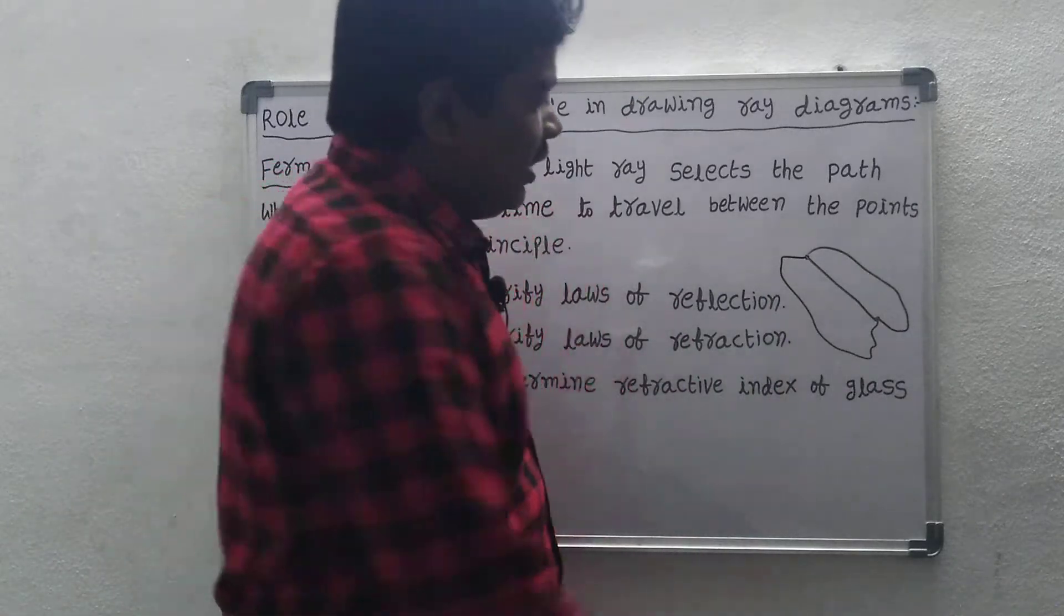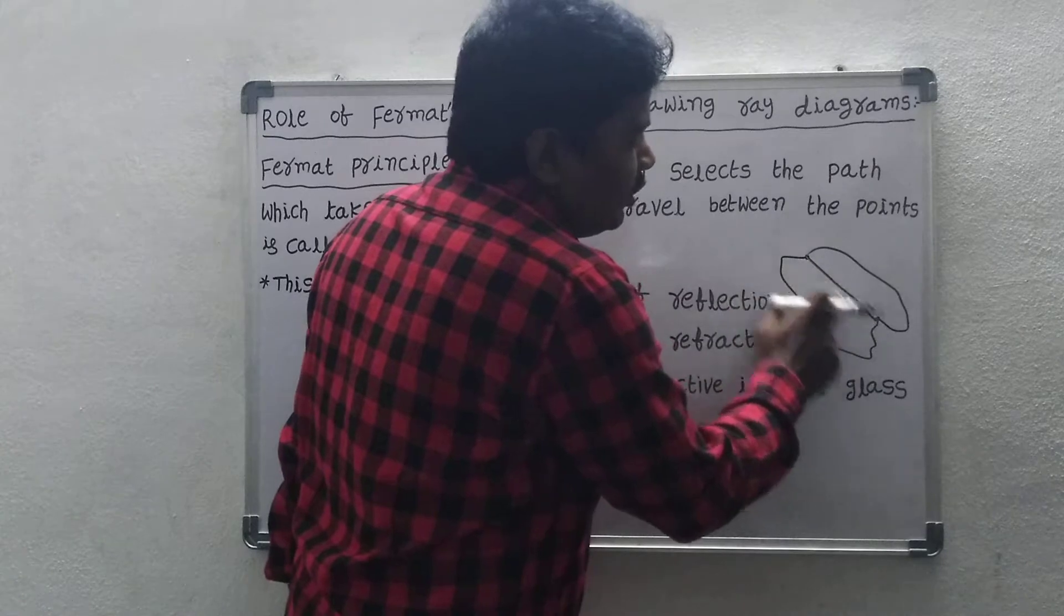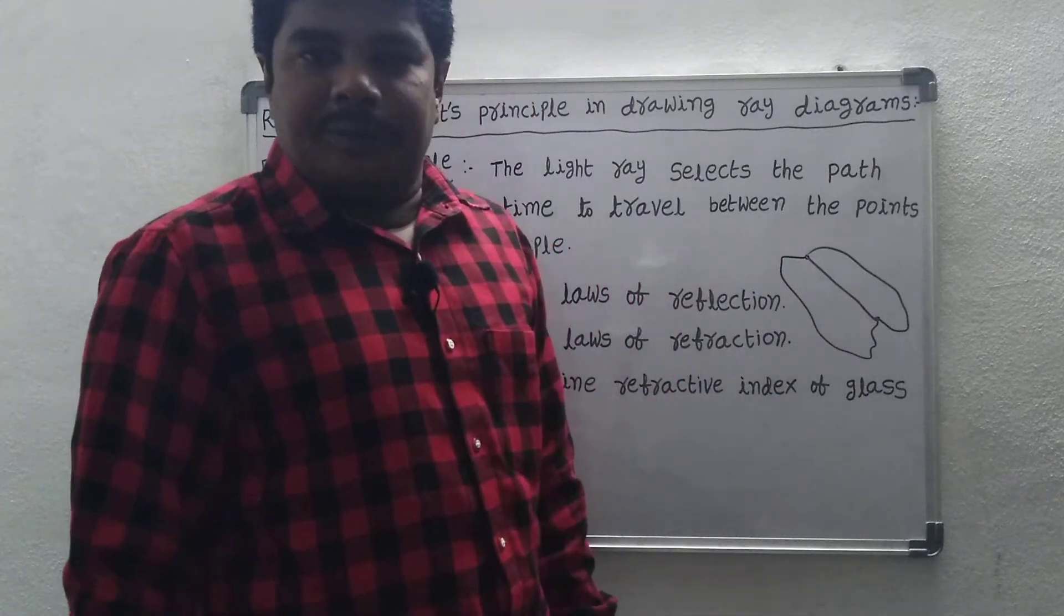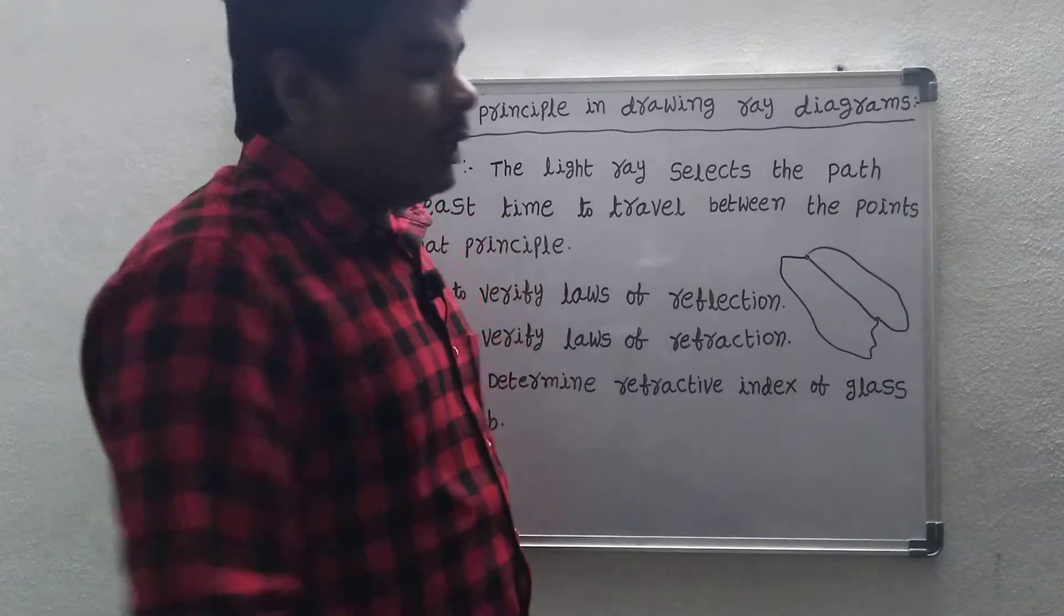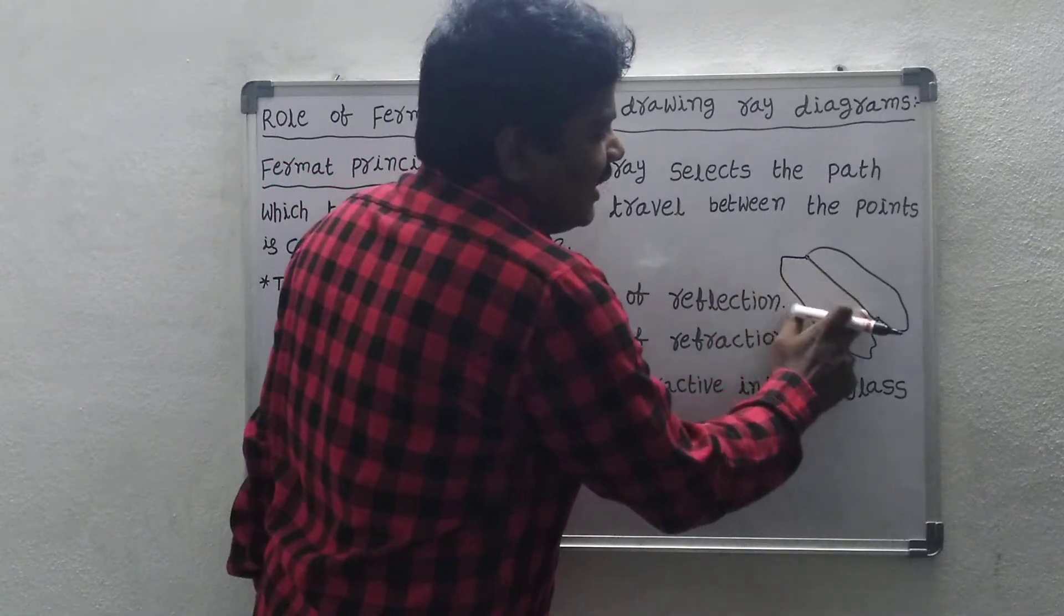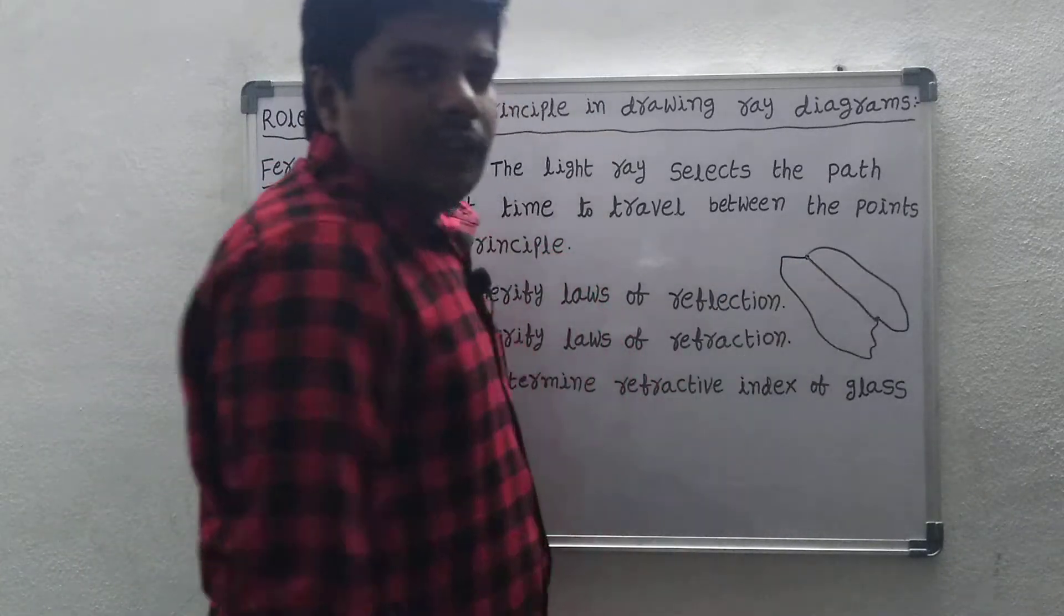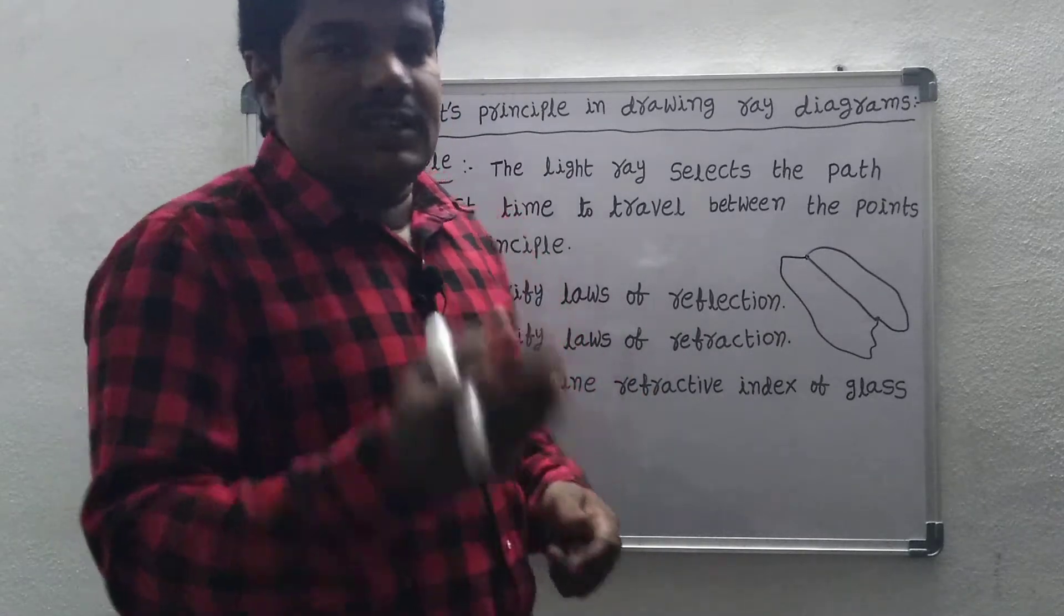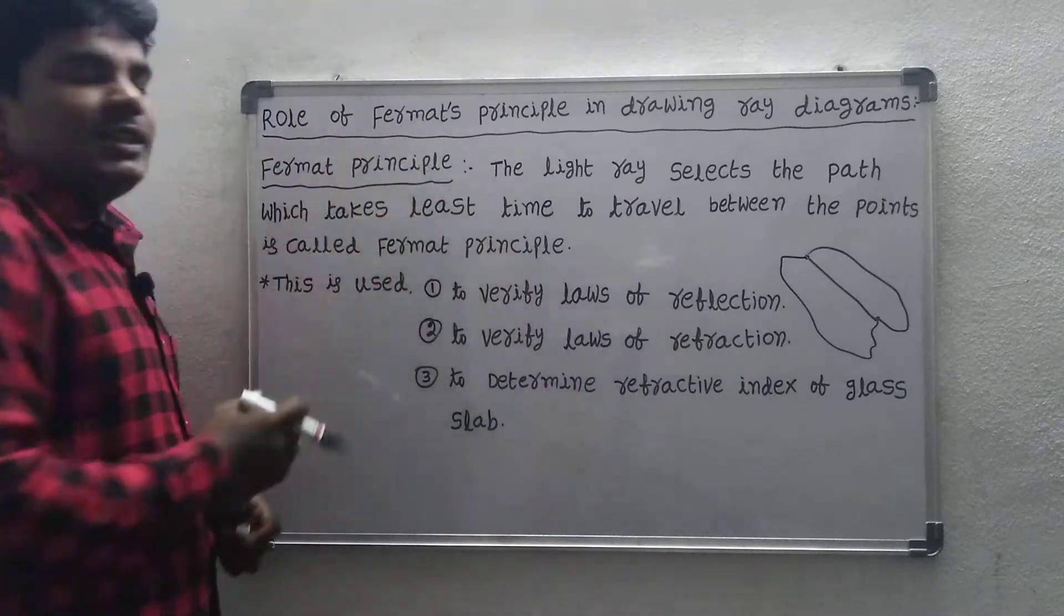Obviously, light selects this path only. That is called Fermat's principle. Fermat's principle means the light selects the path which takes the least time to travel between the points.